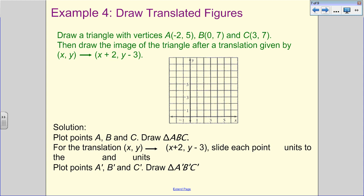We've got one last example to take a look at. We have to draw a translated figure. So it says to draw a triangle with vertices (-2, 5) for A, (0, 7) for B, and (3, 7) for C. Then draw the image of the triangle after a translation given by the original image is to add 2, subtract 3. So this means to go right 2 with your X and to go down 3 with your Y. That's what the plus 2 and the minus 3 means. So let's get those points plotted. I need to do (-2, 5), and that's my A. (0, 7) is my B. And then (3, 7) is my C.